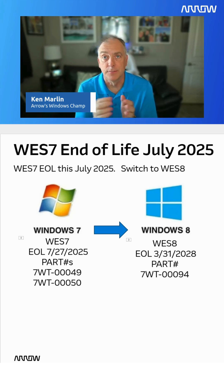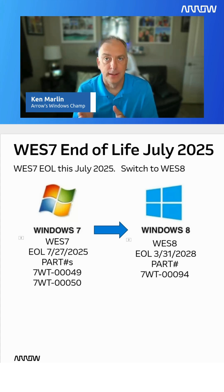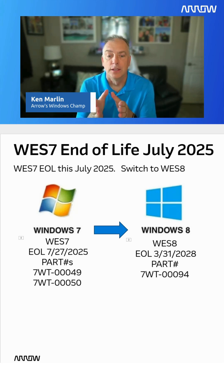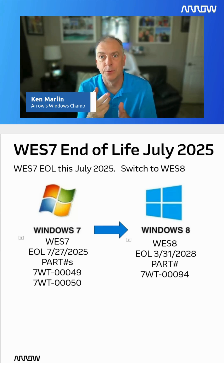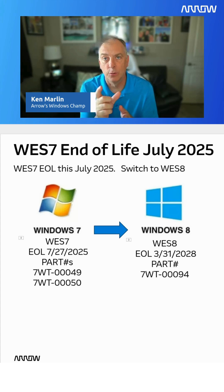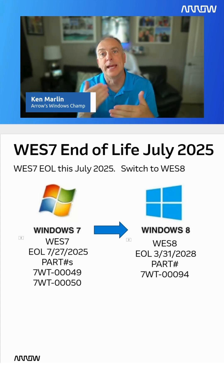So what are your options? You need to buy the next version up, which is WES 8 — Windows Embedded Standard 8. I have the part number shown for you, I have the dates shown for you. It's literally switching two numbers in the part number from a 49 to a 94. Buy the WES 8 KOA sticker license, apply that to your device, and then use downgrade rights, which are now available.